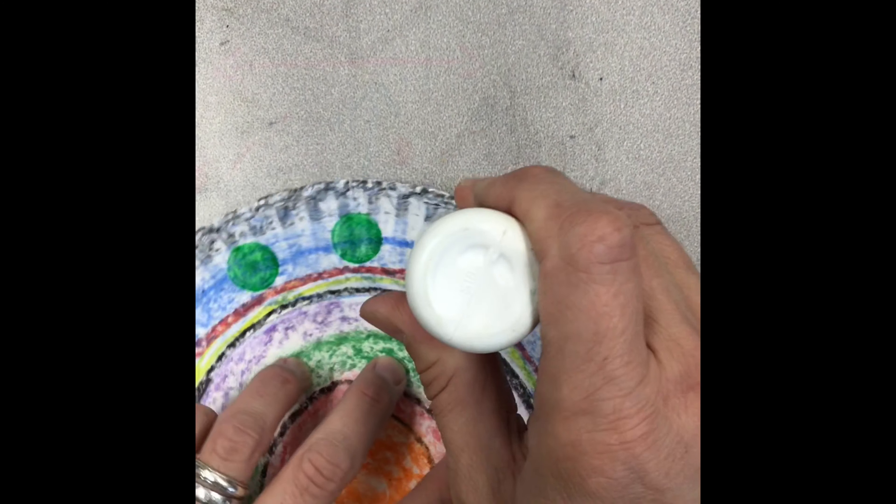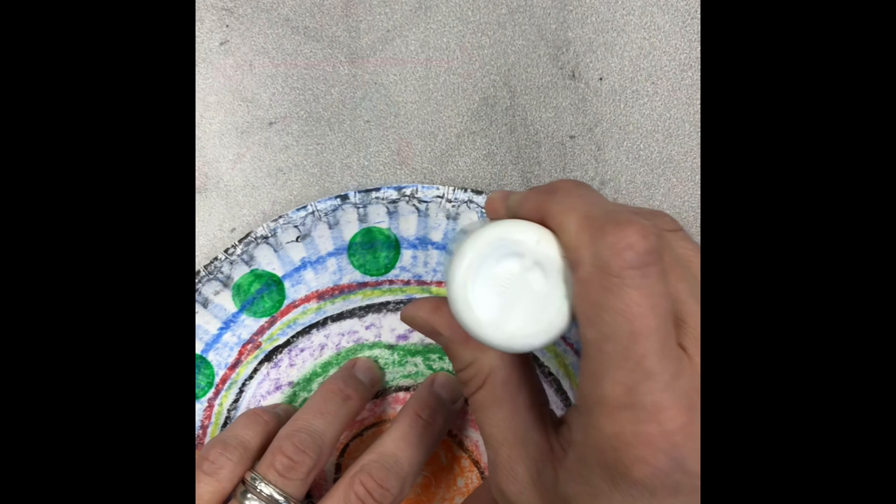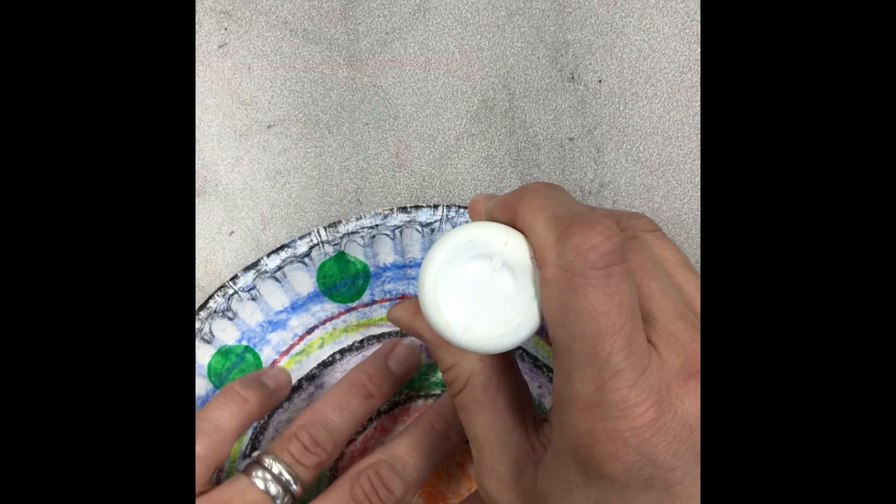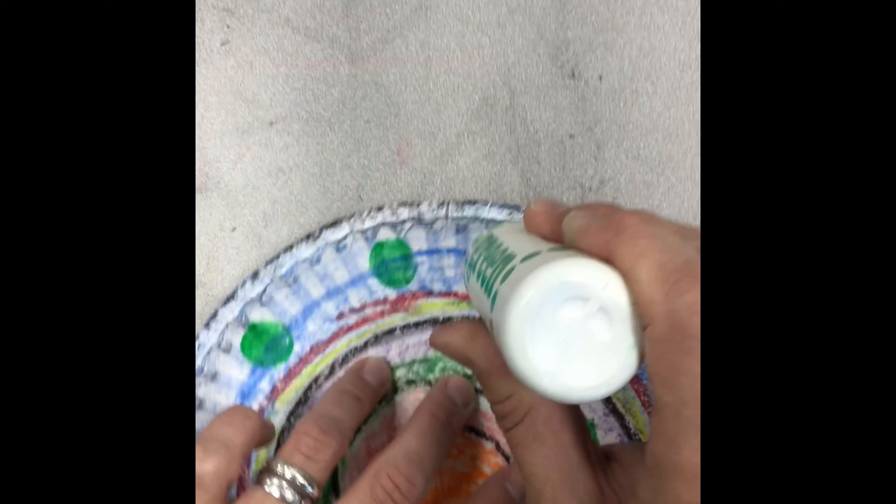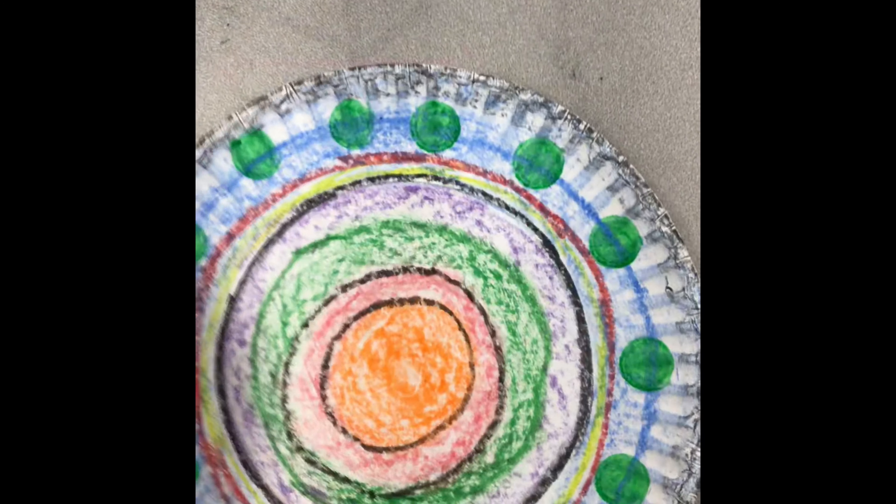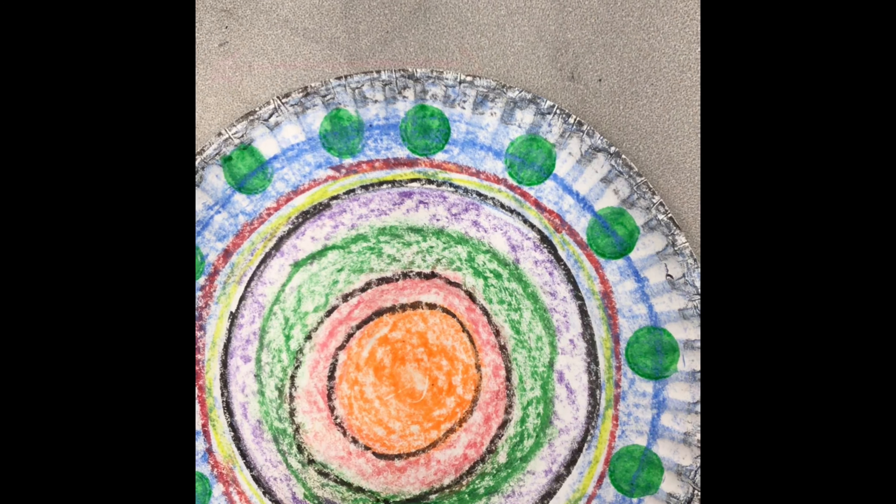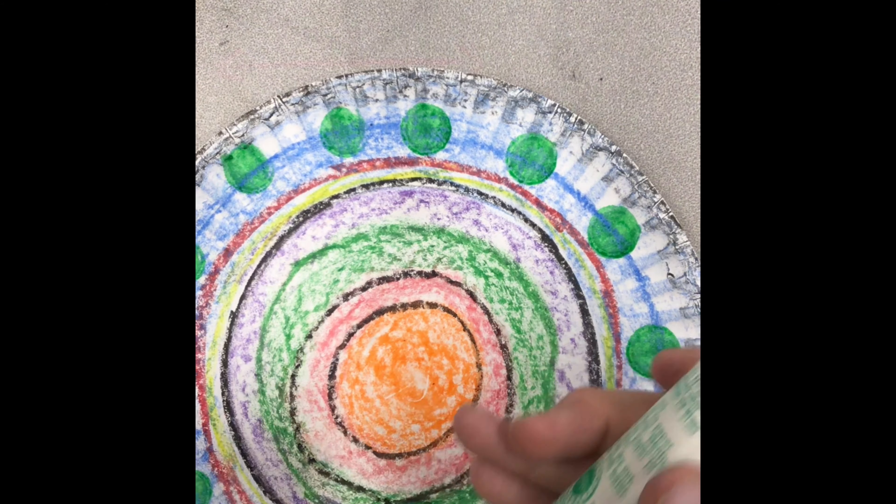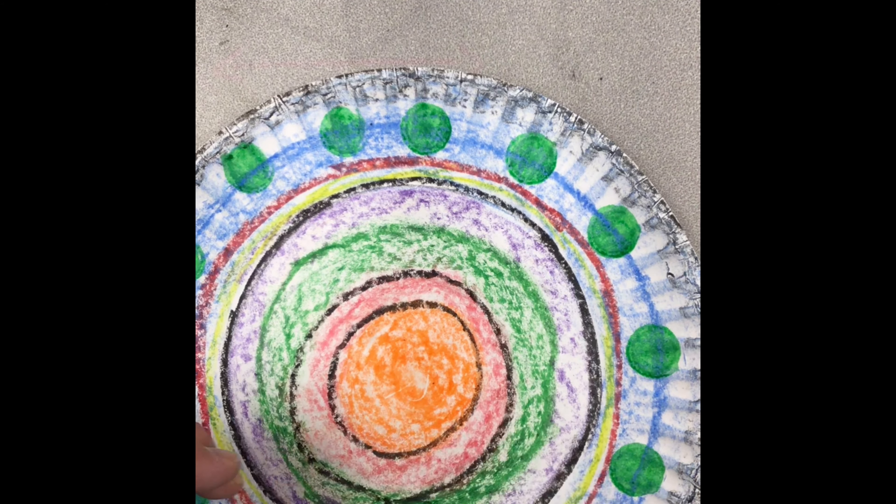Now remember when you use a bingo dauber, we don't shake it, we don't bang it, and we don't squeeze. That makes a bingo dauber a little upset and it might splatter all over your paper plate. As you see, I'm getting ready to describe here. We don't shake it, don't squeeze it, and do not bang it on the table.